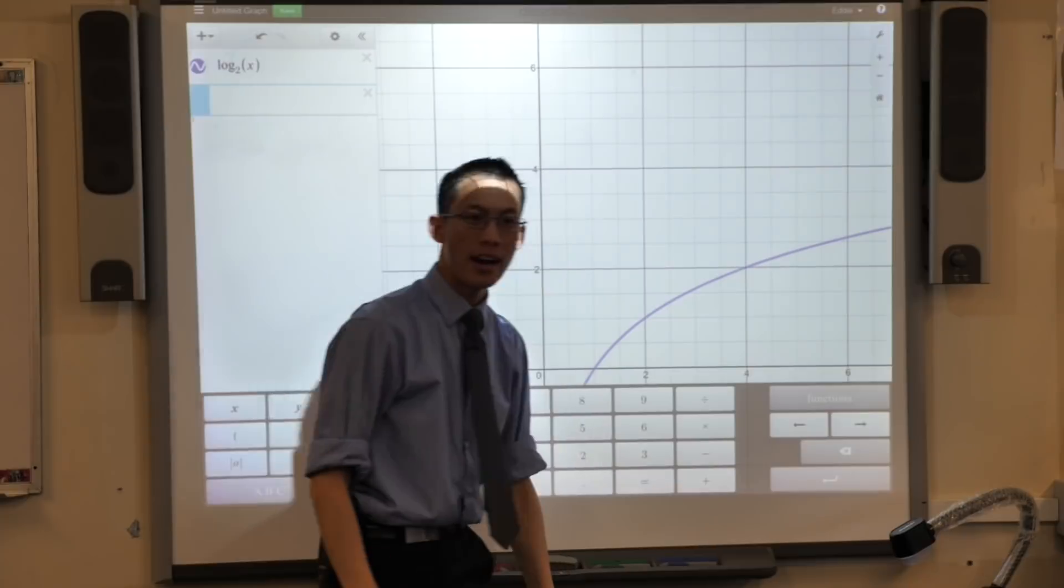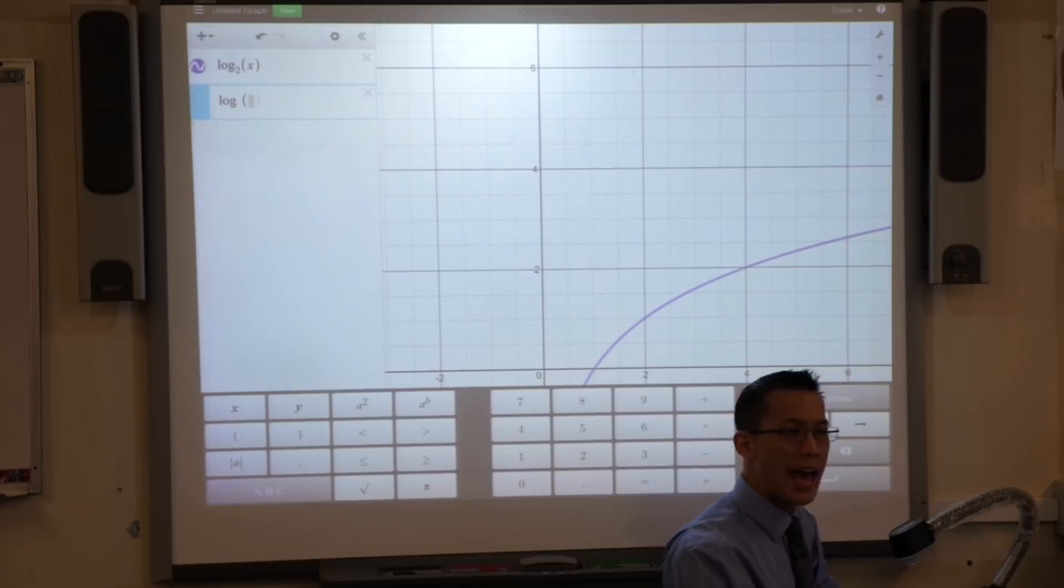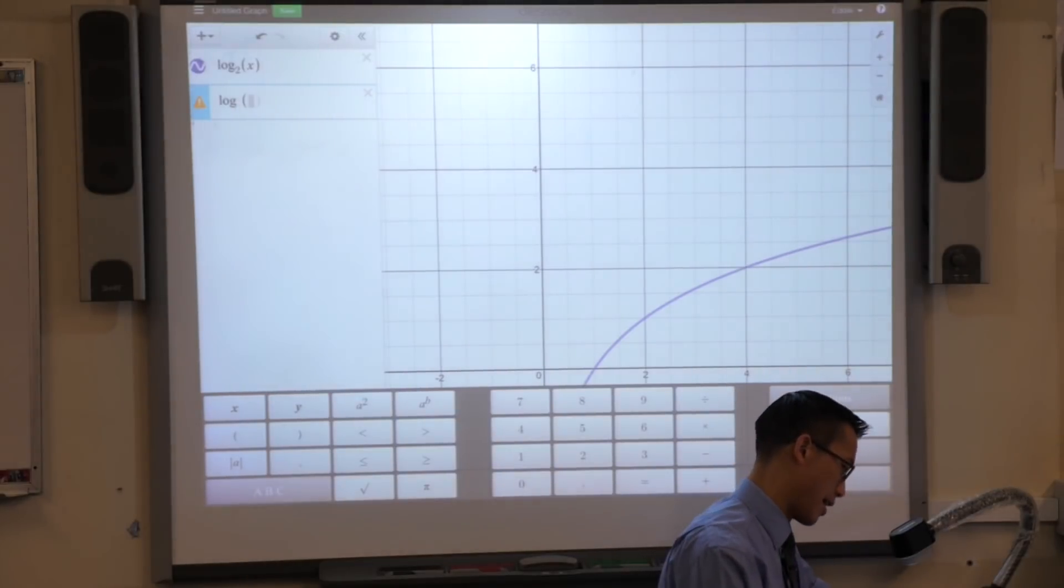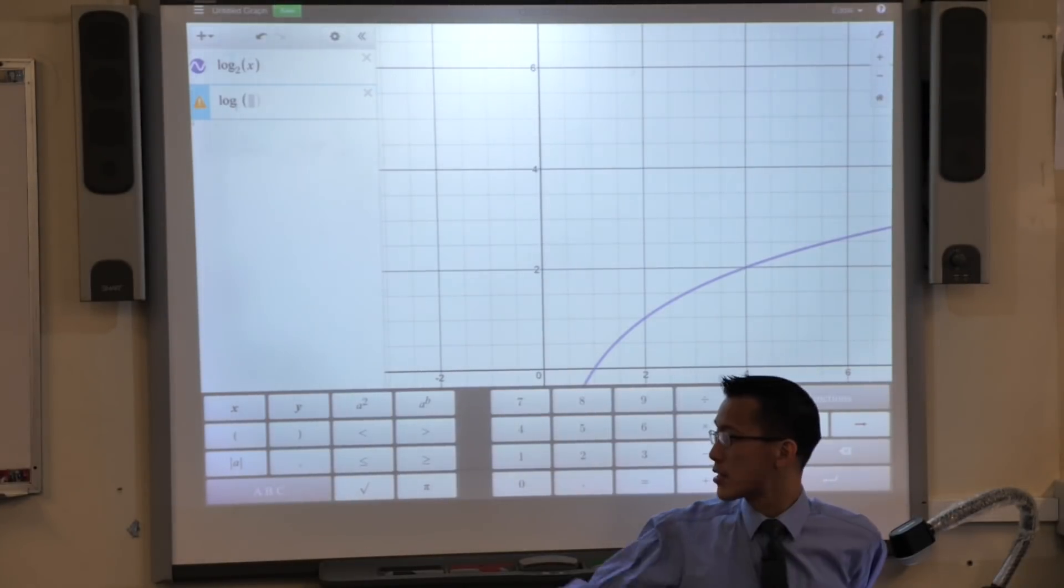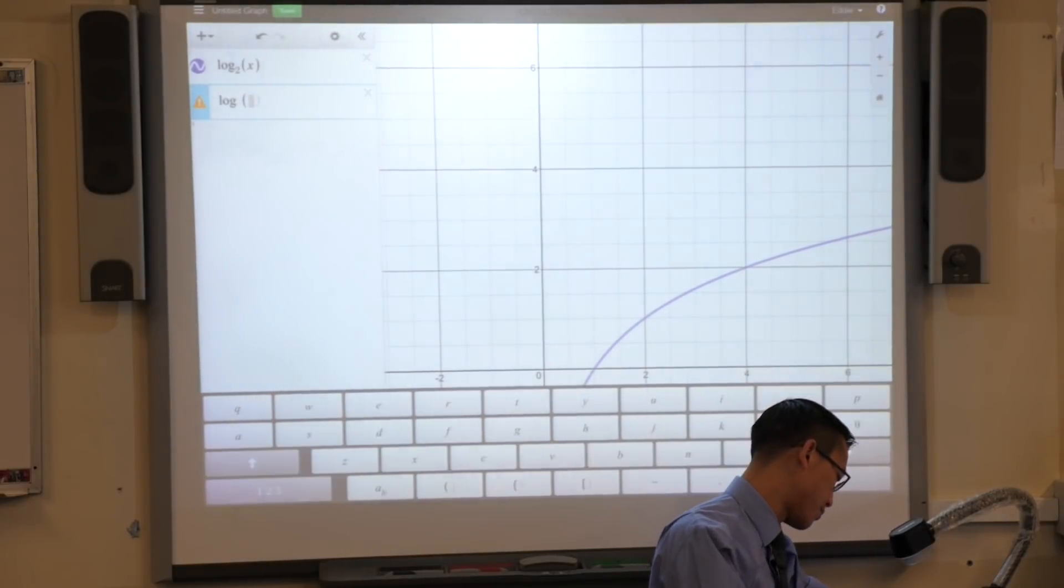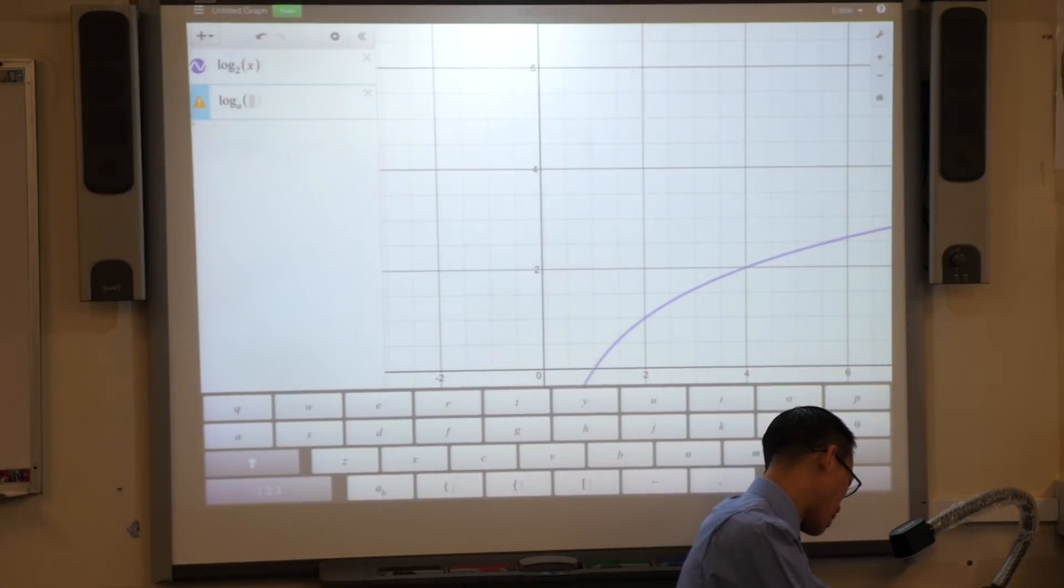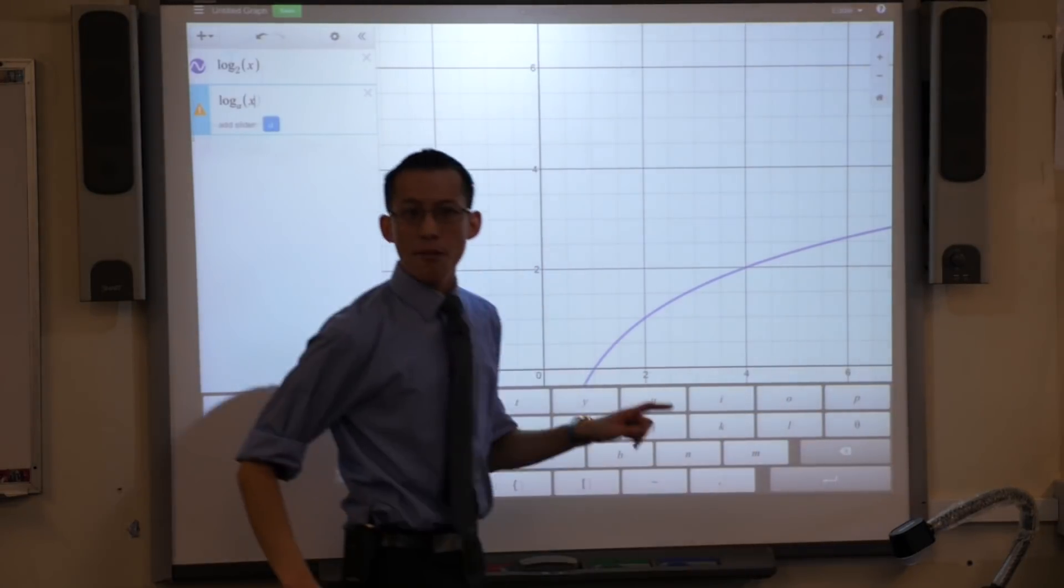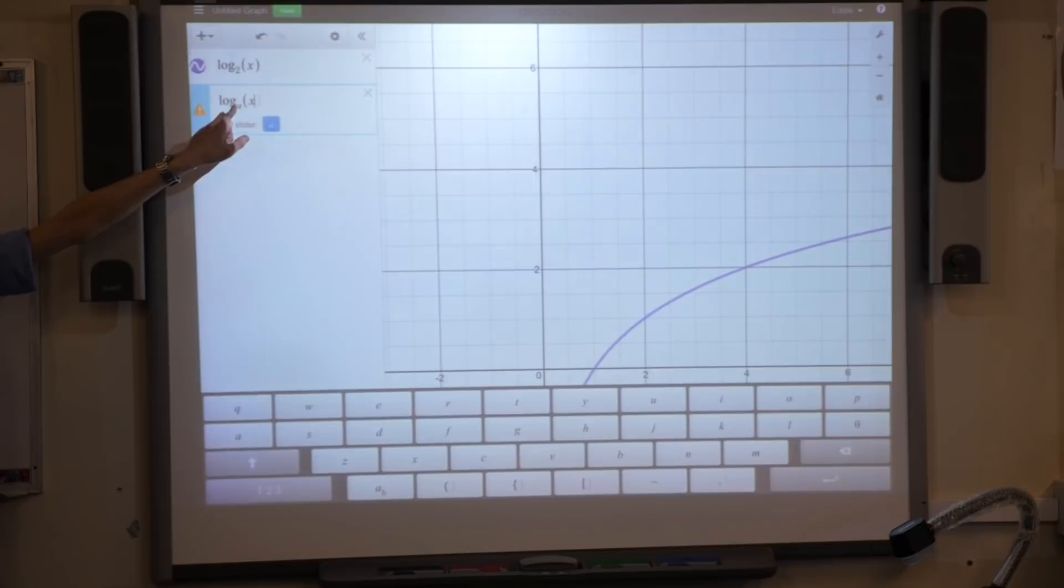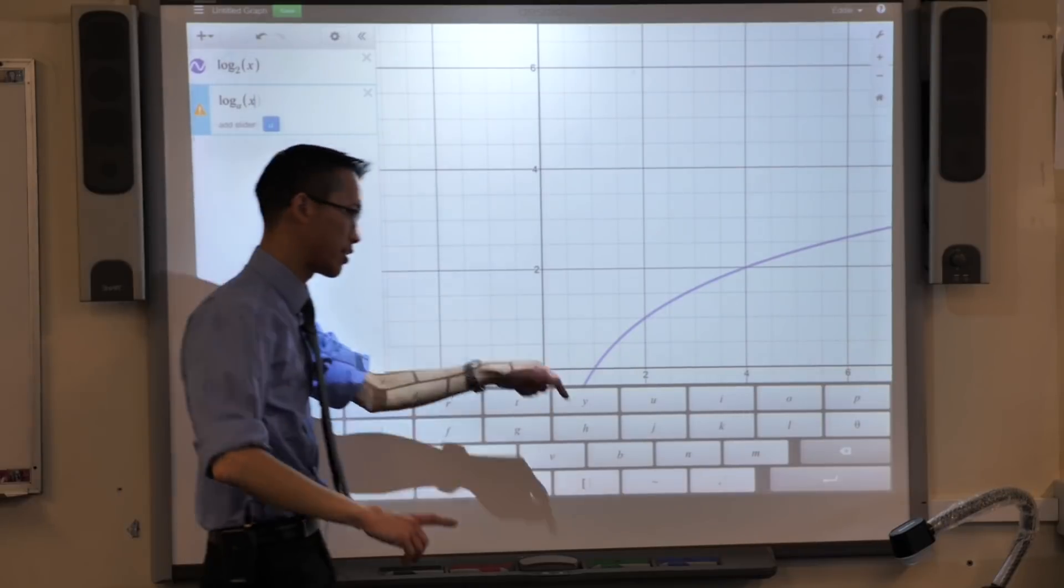So now you've got this log base 2 of X here. Underneath it, I want you to make a new log equation like so. Go to functions, log base A, and this time, see on the left hand side over here there's an ABC button. You can access just a normal QWERTY keyboard and just type in A. Once you've done that, chuck in an X. And if you've done it like I have, see how I've got an A there and an X there, it says add a slider. Who's got the blue add slide button? Good. Click it.